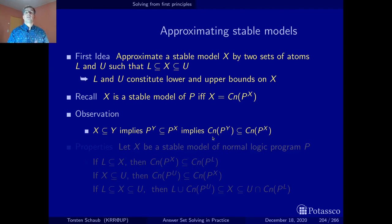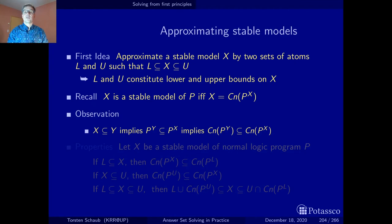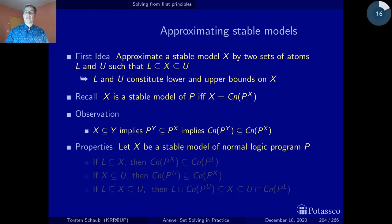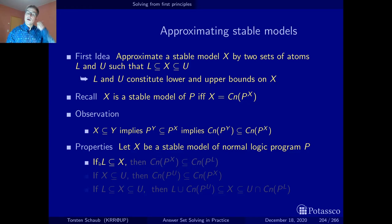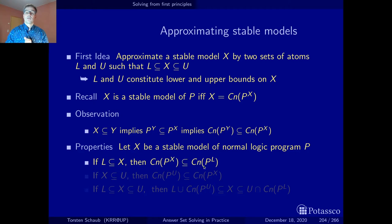The question is what can we do with these insights? A lot — this is the key observation for tightening approximations. If we take X as a stable model of a normal logic program, we know from our prerequisite that the lower bound is a subset of X. By applying our observation on anti-monotonicity, this implies that the consequences of the reduct with the stable model are a subset of the consequences of the reduct with the lower bound. Since X is a stable model, we can replace the consequences of the program reduced with X by X itself, giving us a key relationship.